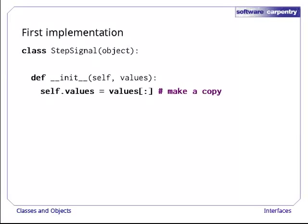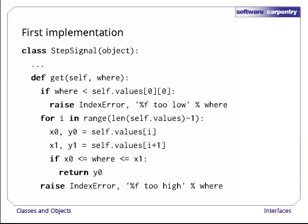Let's implement a step function first. We'll call the class step signal, and its constructor will store a copy of the x-y samples in a member called self.values. Here's its get method. If the point we're supposed to sample is less than the lowest x-coordinate we have, we raise an exception. We don't know enough to guess what the signal was at that point.